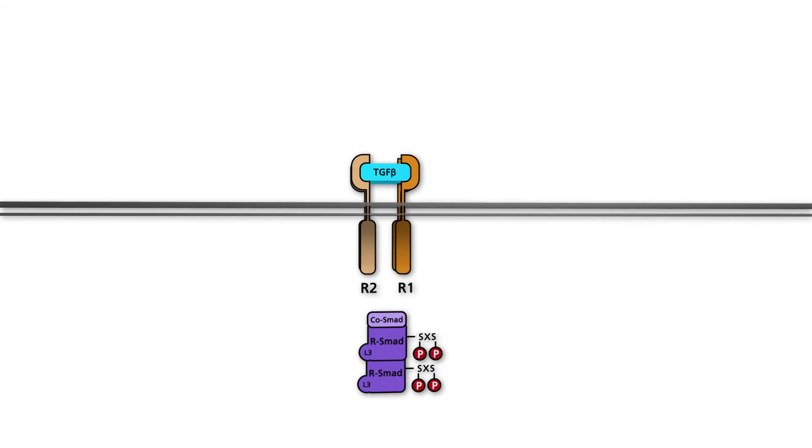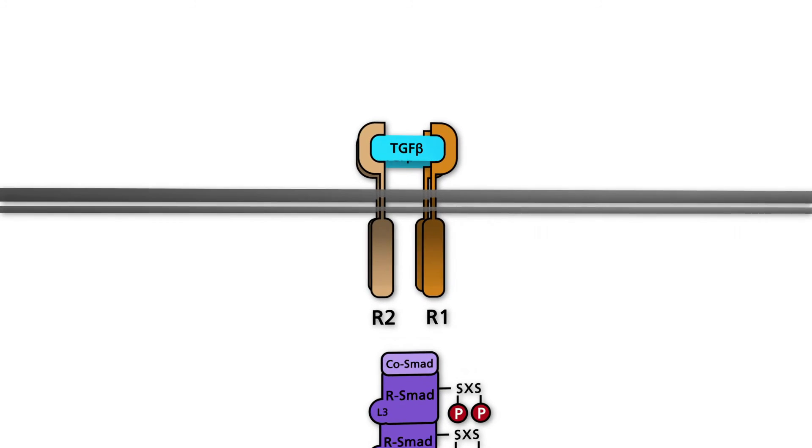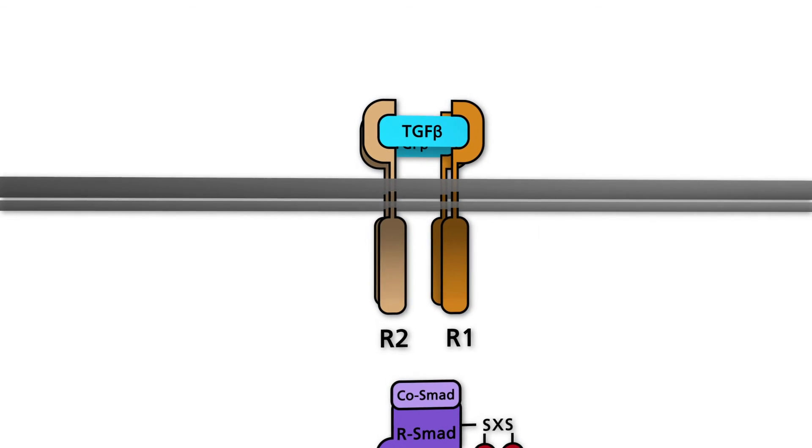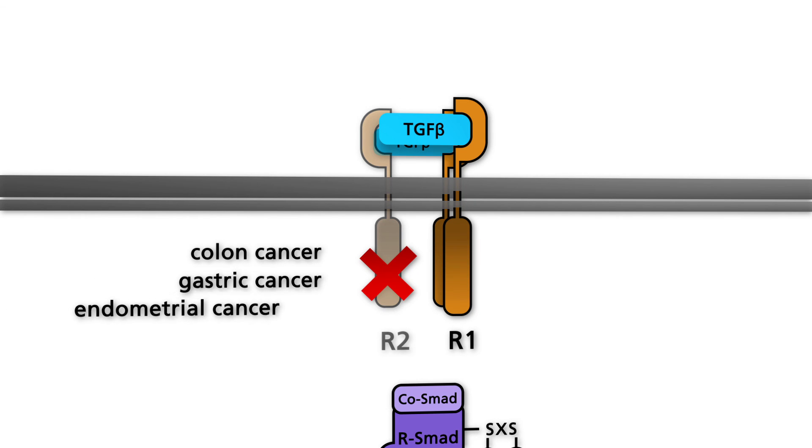TGF-BR2, the gene encoding the TGF-beta type 2 receptor, contains a sequence stretch of 10 consecutive adenine nucleotides. The addition or deletion of an adenine residue in this region renders the encoded receptor truncated and nonfunctional. Such mutations are frequently found in colonic, gastric, and endometrial cancer.